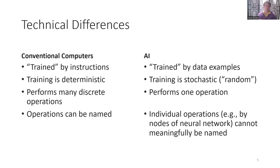What are the differences of AI? Conventional computers are trained by instructions — we just tell the computer what to do. In AI, it doesn't work like that. We don't list operations; we give it data examples. It has a feedback loop and realizes what is good or bad output for a particular set of inputs. In conventional computers, the training is deterministic — we know exactly what it's going to do, we program it linearly.